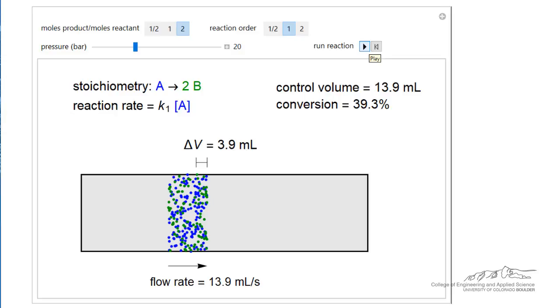So at the inlet we picked a volume of 10 milliliters. Keep in mind this is a steady state process. We're just following a volume through the reactor. And now at the point where we stopped partway through the reactor we've converted 39.3% of reactant A.